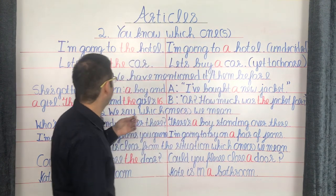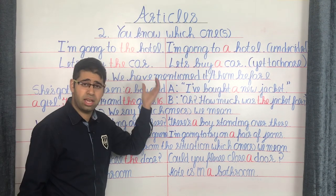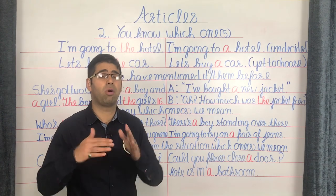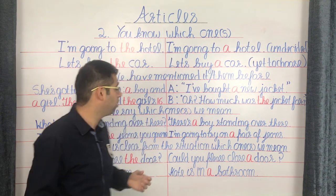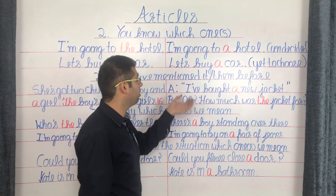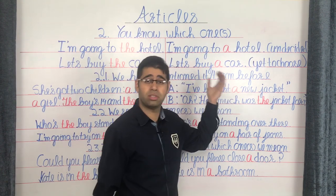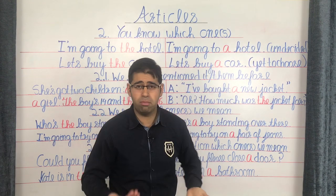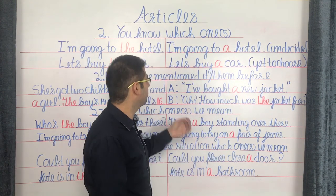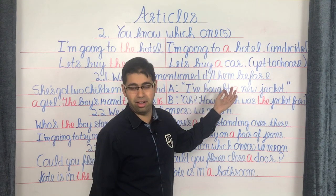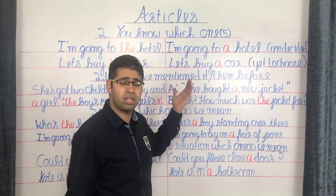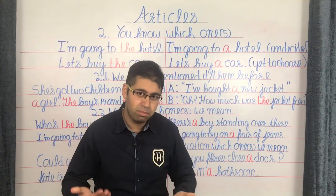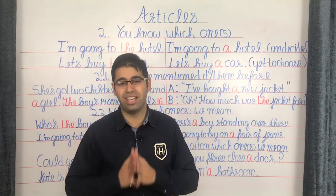Let's take one more example: 'Let's buy the car' — the listener and speaker are both thinking about the same car, they've already made their choice, hence 'the car.' As opposed to 'let's buy a car,' where both parties are yet to choose a car and do not have any particular car in mind. Now let's move on to situations where the speaker and listener might already be aware of the person or thing being talked about.